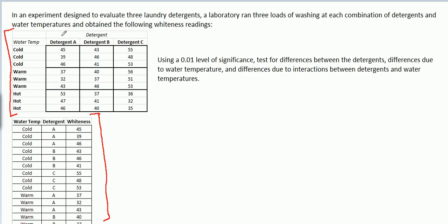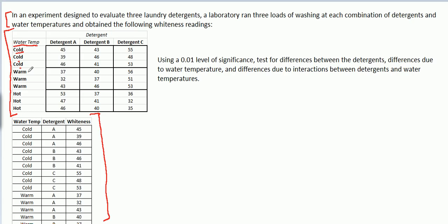So first off, we have a little description here. This amounts to this data here. We have three detergents — A, B, and C — for lack of their actual names. And water temperature is mentioned. We have three water temperatures: cold, warm, and hot.